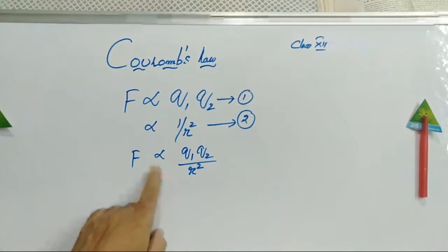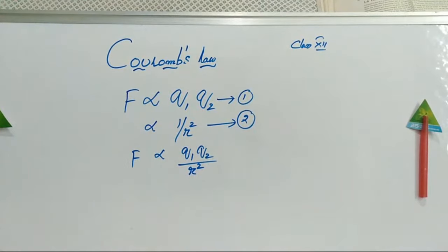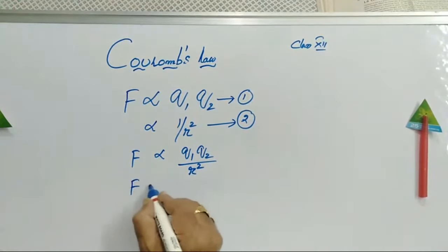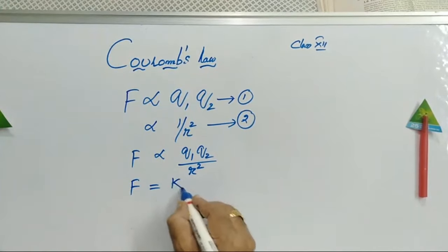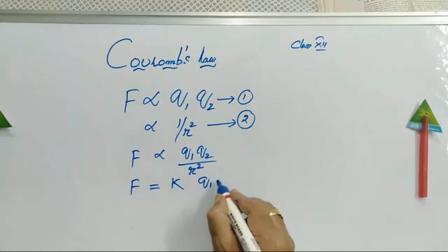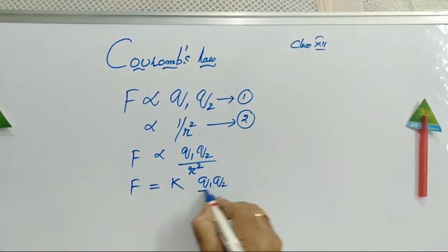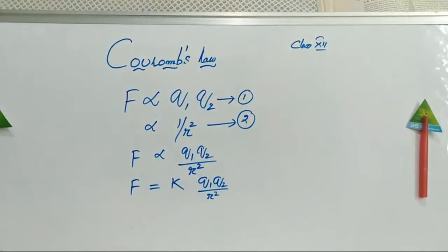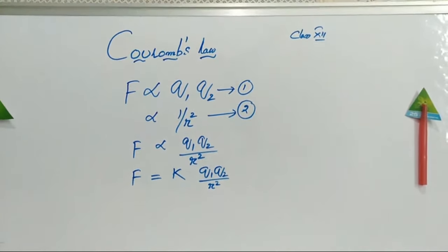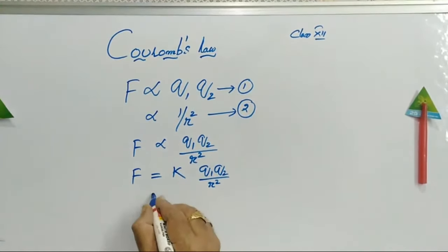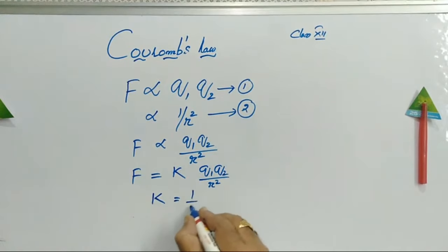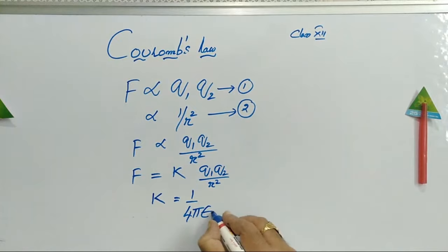Wherever a proportionality sign is to be removed, you have to multiply by a constant. So the next step: I can write it as K times Q1 Q2 by R square. This K is a constant.